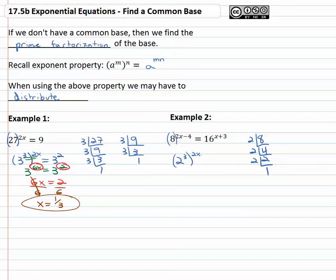Which means the 8 is really 2 to the third power, and then it still has a 2x minus 4 on the outside. 16 also has a prime factorization, divide by 2 is 8, divide by 2 is 4, divide by 2 is 2, divide by 2 is 1. 16 is 2 to the fourth, so the 16 is 2 to the fourth, and there's still the x plus 3 on it.